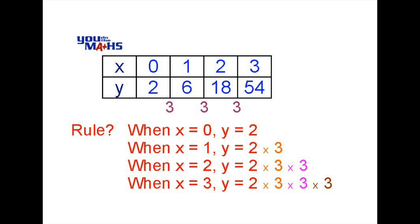Now since there's repetition in our results, we can save some time by using index notation. When x equals 1, y equals 2 multiplied by 3, or 3 to the power 1. When x equals 2, y equals 2 multiplied by 3 twice, or in this case 3 squared. And when x equals 3, we can see that y is equal to 2 multiplied by 3 to the power 3.